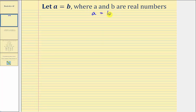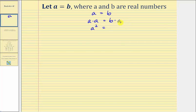For the next step, we'll multiply both sides of the equation by A, so we'd have A times A equals B times A. A times A is equal to A squared. On the right side, we'll use the commutative property of multiplication: B times A equals A times B, which equals AB. So we have A squared equals AB.